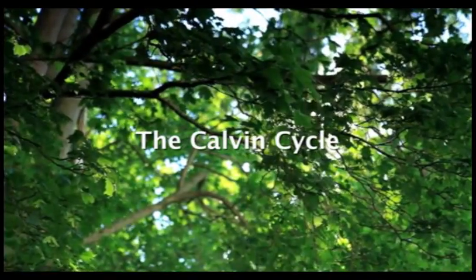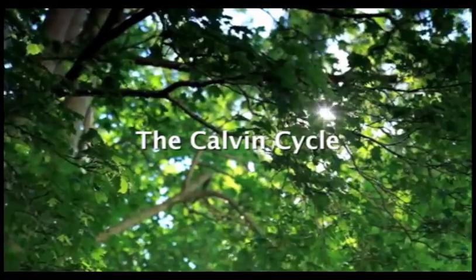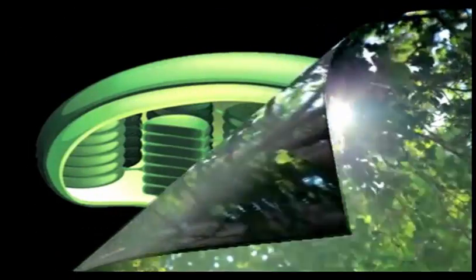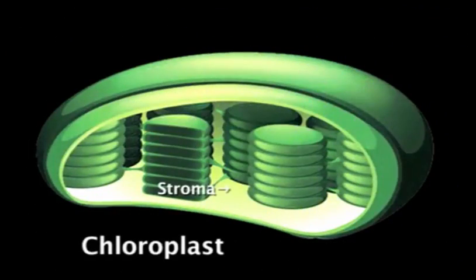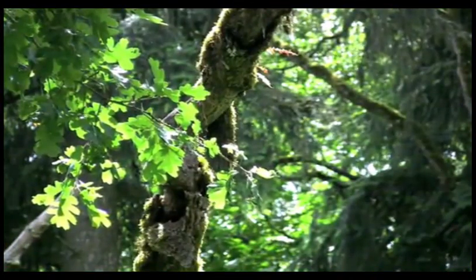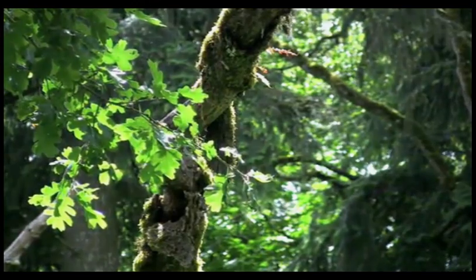The light-independent reactions of photosynthesis, also known as the Calvin cycle, can take place both in sunlight or in darkness, and result in the creation of energy-rich sugars. These reactions occur in the fluid-filled stroma of the chloroplasts and require carbon dioxide from the air, as well as the ATP and NADPH produced during the light-dependent reactions of photosynthesis.